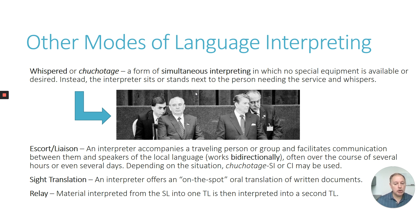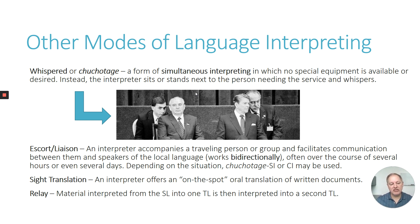In escort or liaison interpreting, you may use chuchotage or a form of consecutive interpreting over the course of several hours or even days, accompanying a group or delegation. Sight translation is another mode — a hybrid between translation and interpreting — where you do an on-the-spot oral translation of a written document. Think of a legal deposition where the interpreter is handed a piece of evidence and asked by the attorneys or judge to interpret it on the spot, orally, going from text to speech. Finally, relay interpreting is when material is interpreted from the source language into one target language, and then from that target language into another — for example, English to Spanish, Spanish to French, French to German.